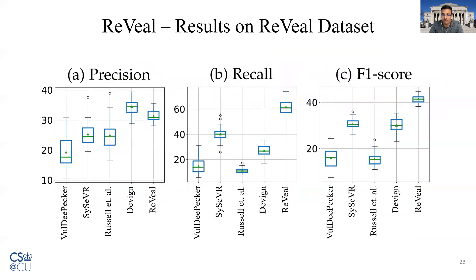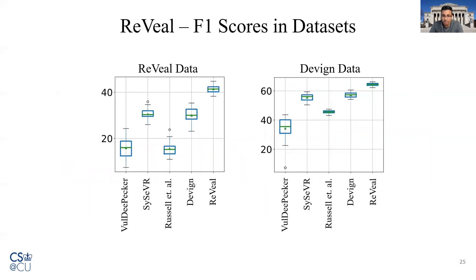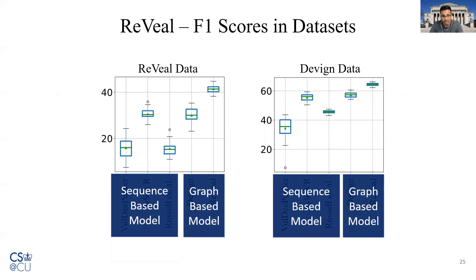Here are the results of Reveal on detecting vulnerabilities in our collected datasets. Reveal outperforms all existing techniques in terms of recall and F1 score. On the Devign dataset, Reveal outperforms all existing techniques in terms of precision, recall, and F1 score. If we look closely, the graph-based models — that is, Devign and Reveal — perform better than the sequence-based models, that is, VulDeePecker, SySeVR, and Russell et al.